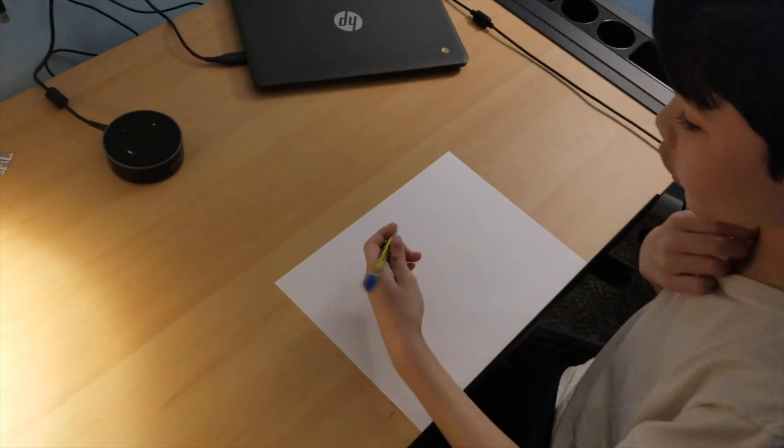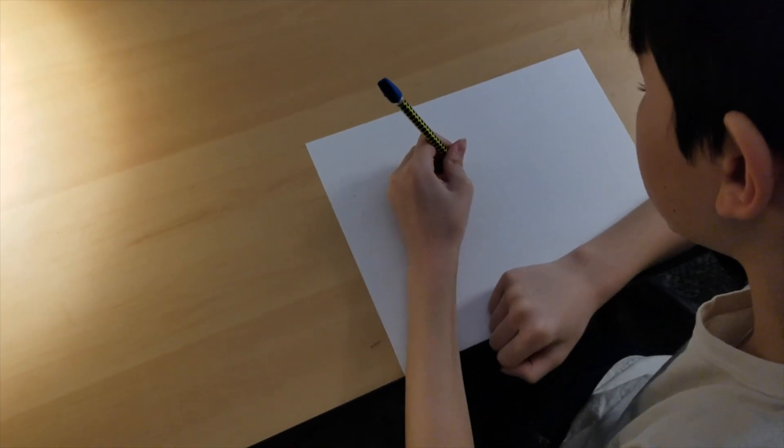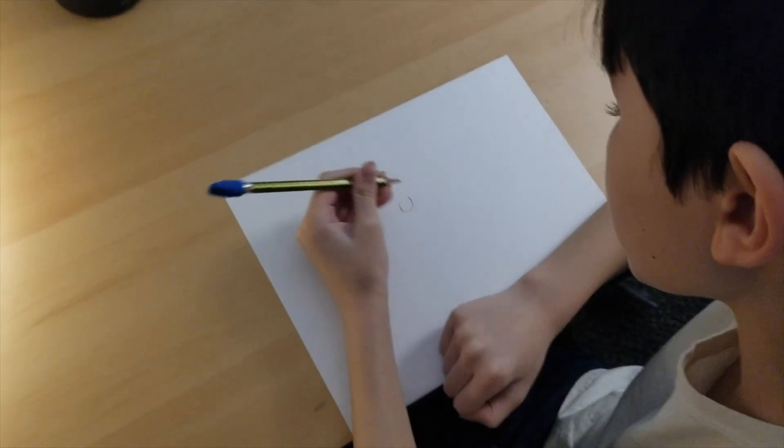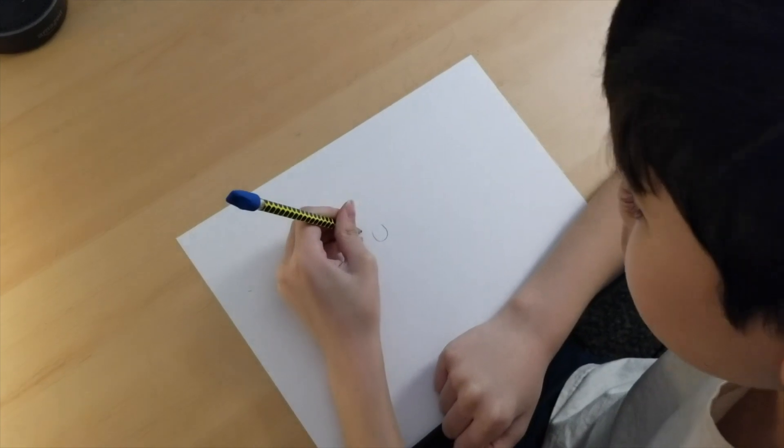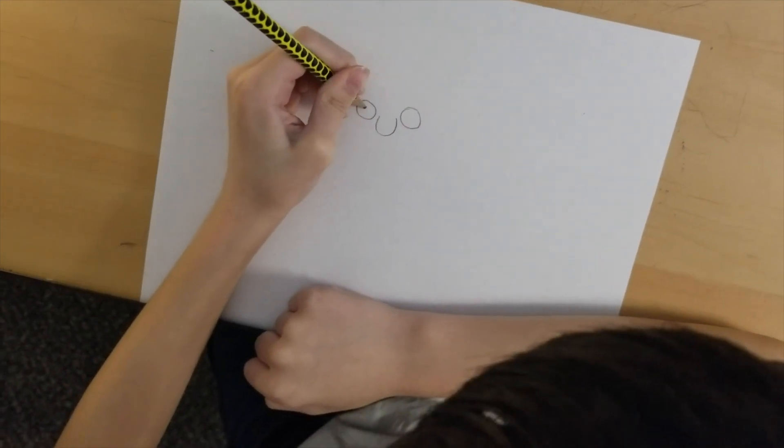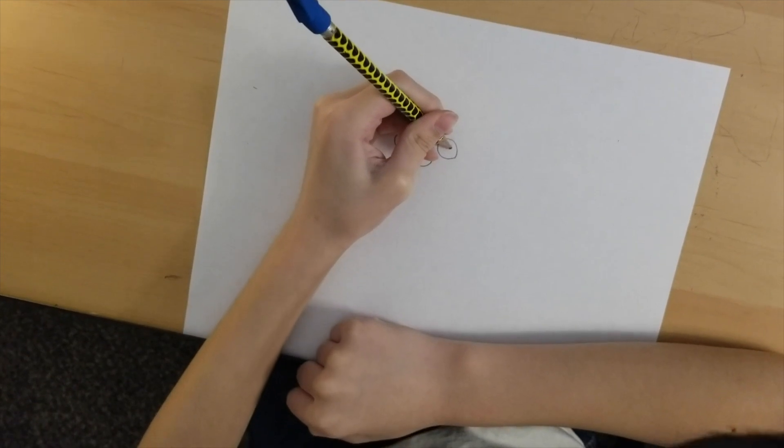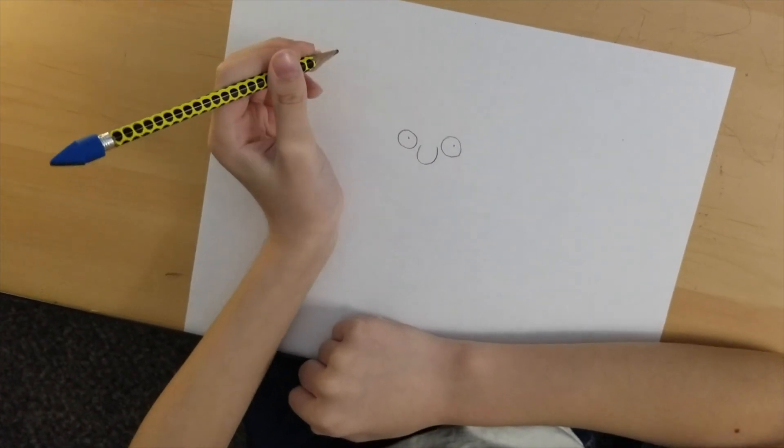So right now we're going to start with his nose. There's the U, kind of simple. And then you draw two little circles to make his eyes. Then you put one eye in the middle, but the other eye, it has to be off to the side a little to make him look a little crazy.